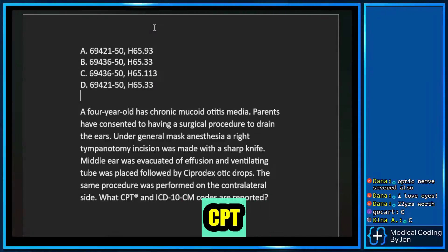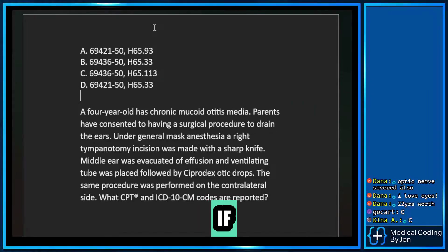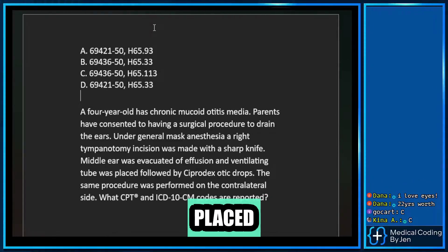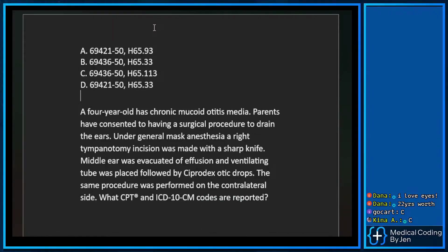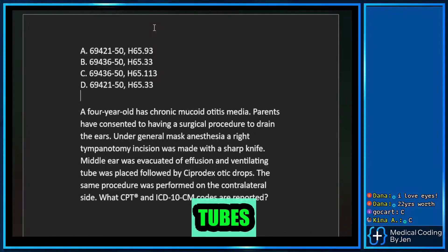You need to look inside the CPT exam question and see whether the kid already had tubes put in, or if that's what you're doing today. Myring, for the CPT book and picking the correct answer, means that tubes are already placed in the kid before you saw them today. Tympan means that they're here today to get tubes put in.